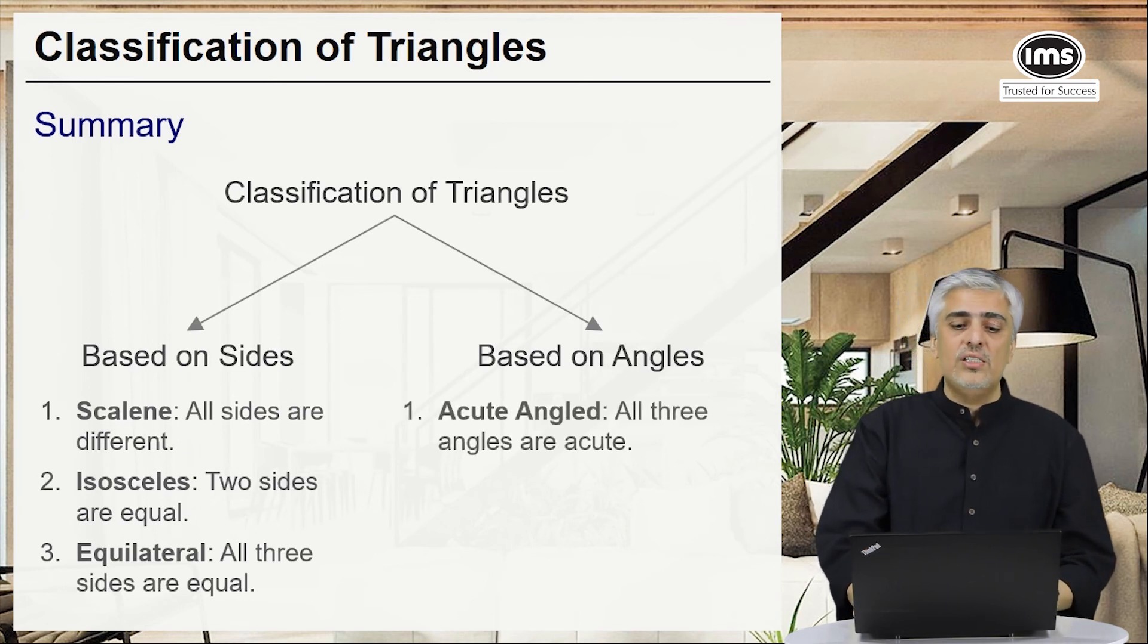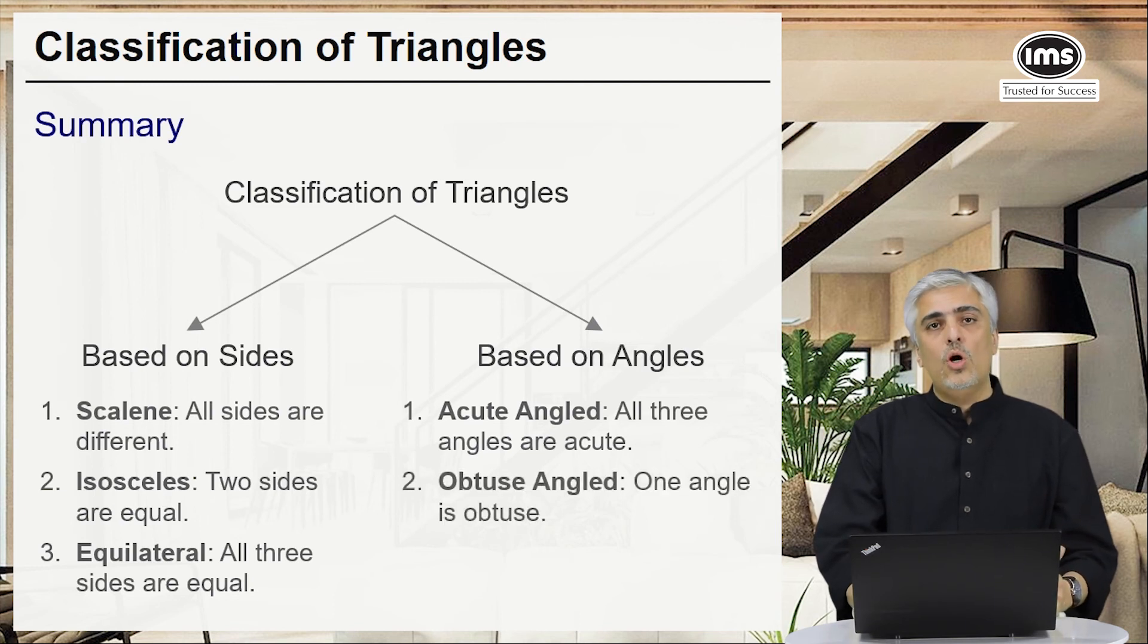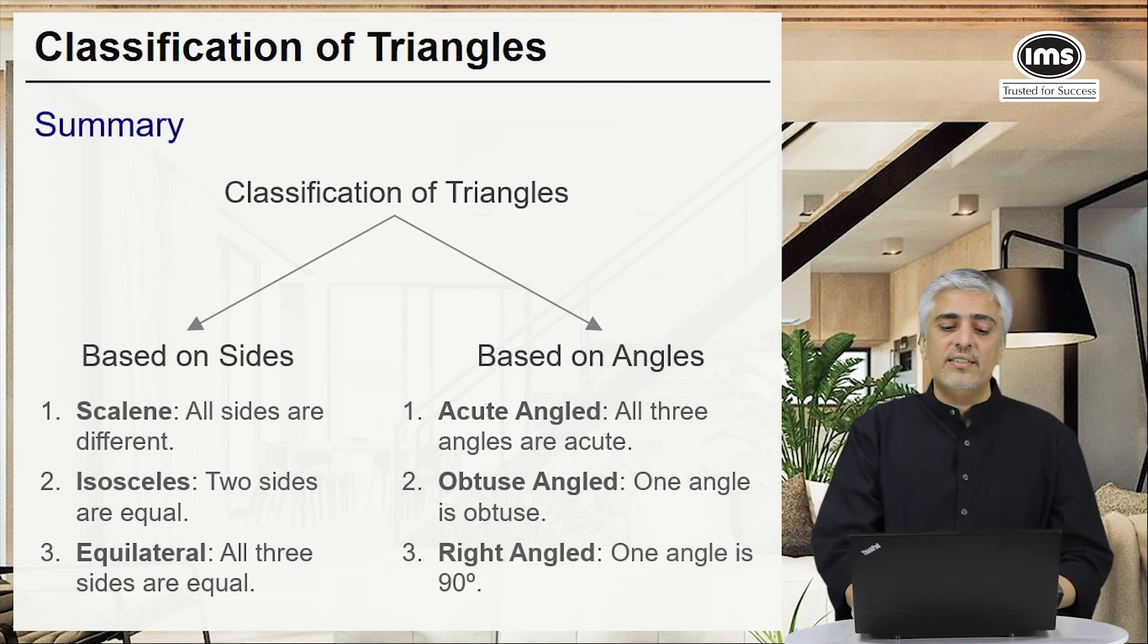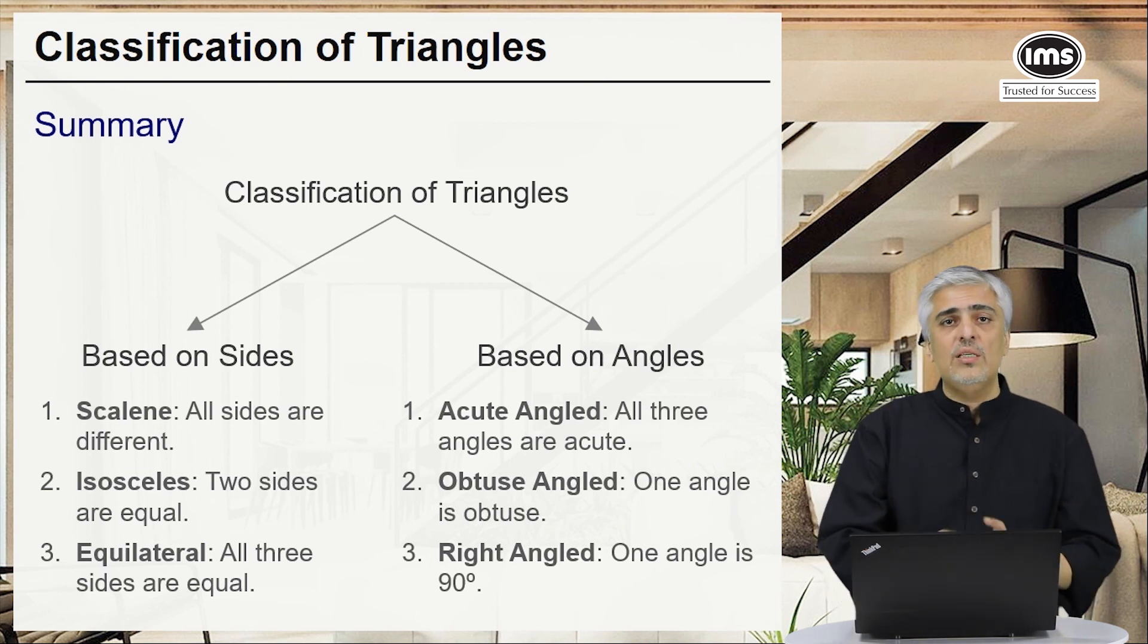Based on angles, you'll have acute angle triangle—all three angles acute. Obtuse angle triangle—one angle is obtuse, two angles acute. And third, right angle triangle—one angle is 90 degrees and the other two angles are complementary. So that's it with the properties and different types of triangles.